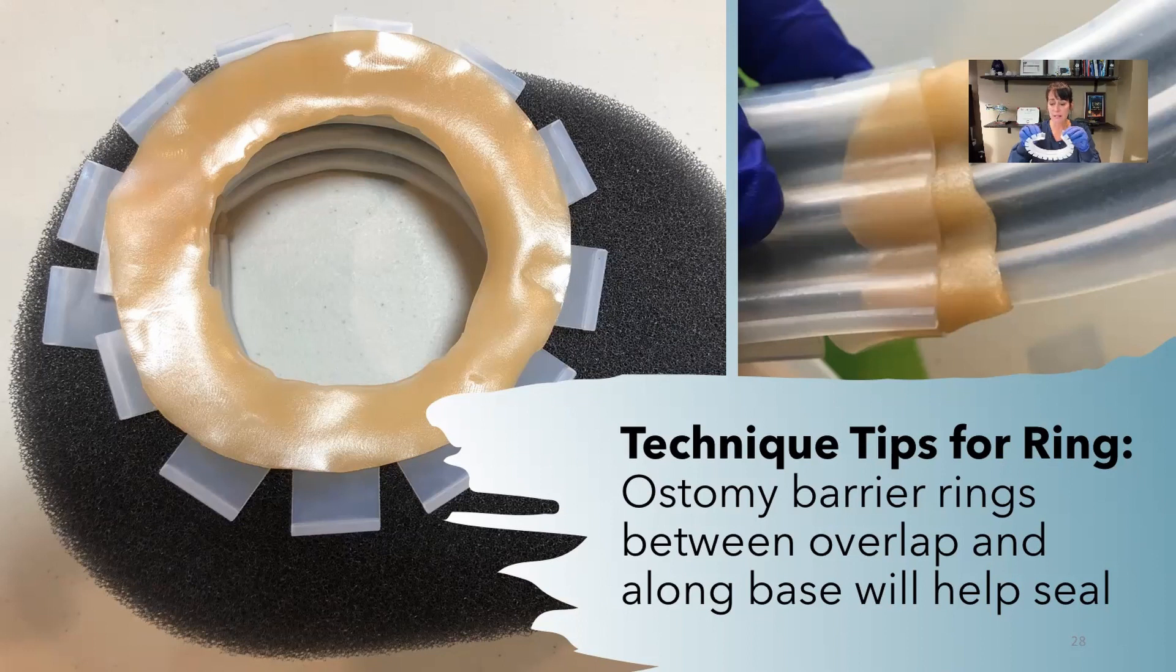Even if you put it over itself, I think you'd still would have a bit of an air leak. So you have to use that barrier ring kind of squish it in there, so it makes a nice ring.